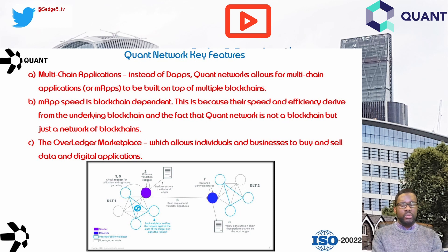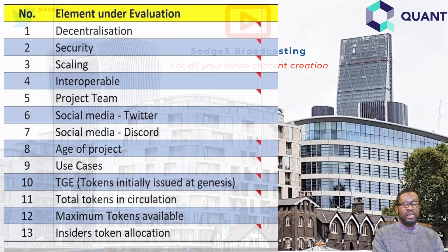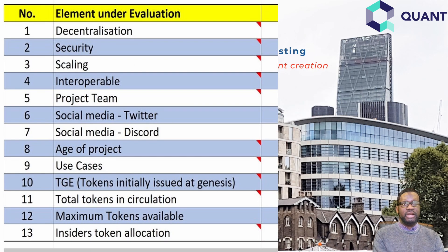As part of our review, we are going to apply our usual DYOR risk evaluation toolkit, where we apply 13 elements, score them out of 10 each, then take the aggregate score and classify it under four risk categories. We'll share that with you later on in the video.